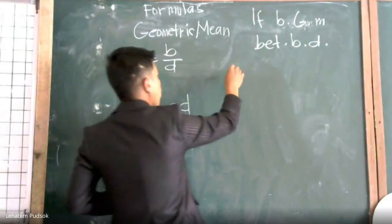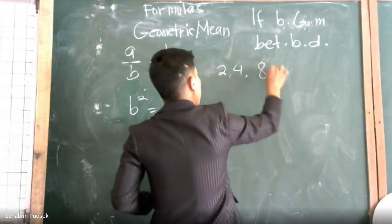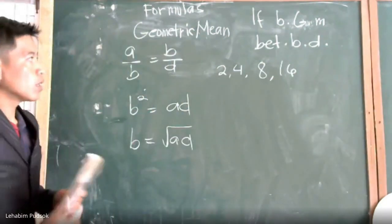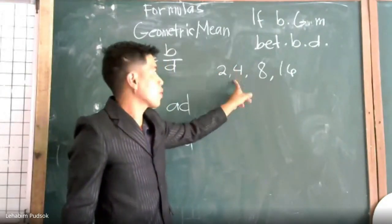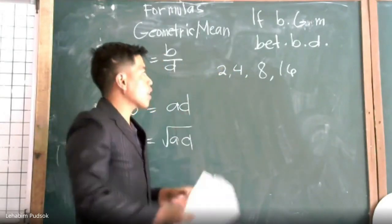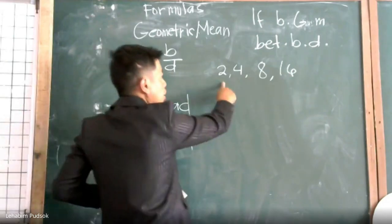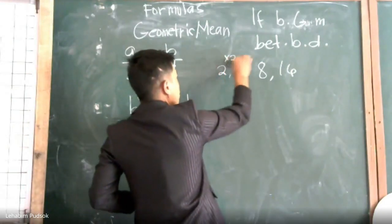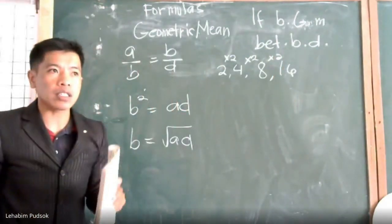Now, geometric mean. We have here 2, 4, 8, 16. Can you say that this is an arithmetic sequence? No, it's not. Why? Because arithmetic sequence uses adding. But here, if you get the pattern, it is by multiplying 2. If you are multiplying, it is already a geometric sequence.